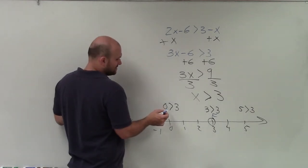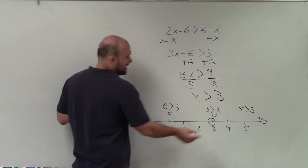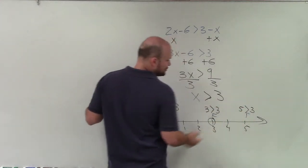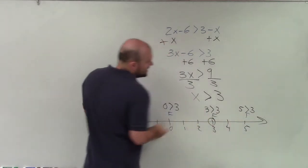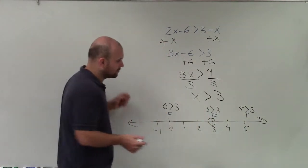Is 0 greater than 3? No, 0 is less than 3. So that's false. And is 5 greater than 3? Yes, that's true. So basically, from our starting point of 3, I'm always going to shade to where it's true and away from where it's false.